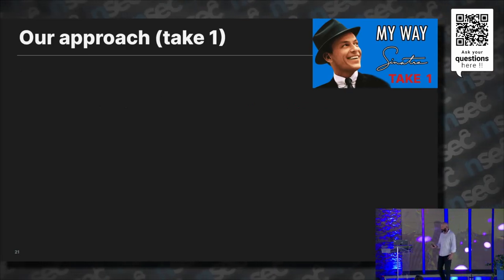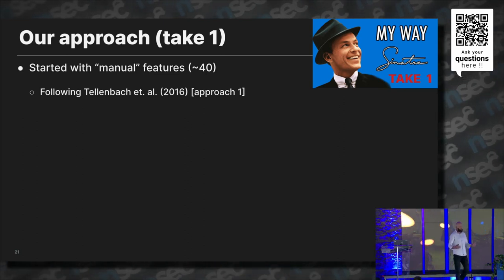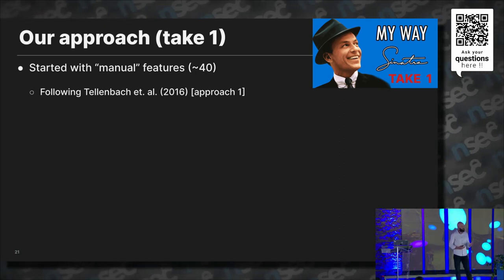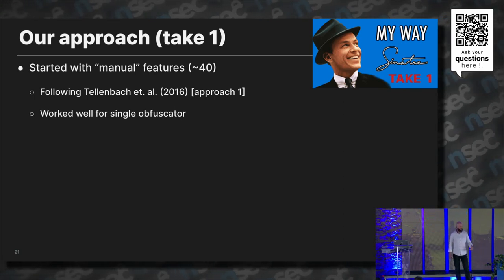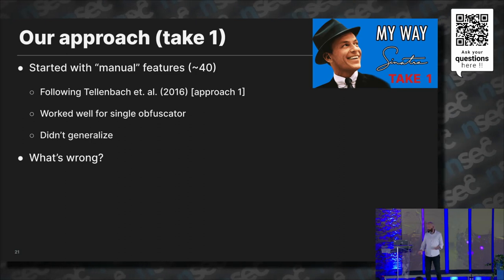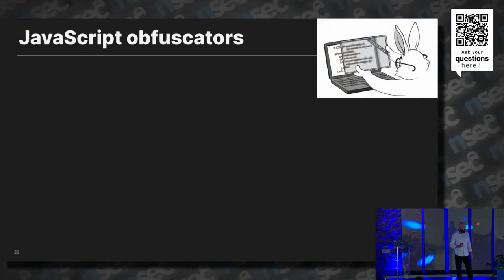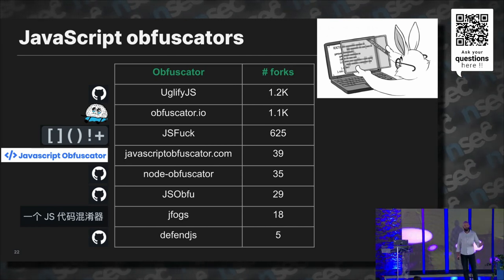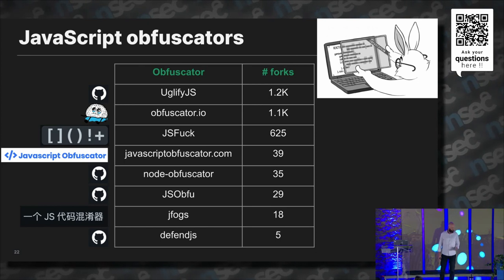Our first approach was inspired by the first work. We started simple — we wanted a model that benefits from decision trees for explainability. With a decision tree it's easy to see which features are affecting the model and how. We took about 40 features and trained on a single obfuscator, and it turned out the model didn't generalize. To understand why, we need to dive deeper into the various JavaScript obfuscators. The most used ones, sorted by GitHub forks, are uglify.js and obfuscator.io, among others.